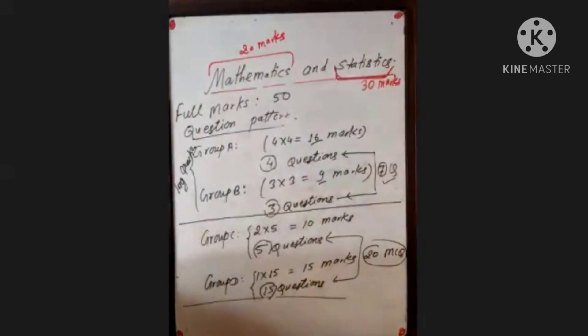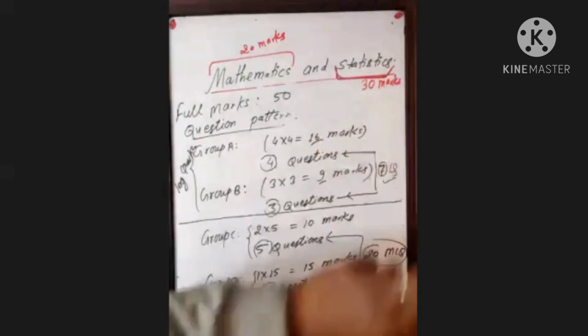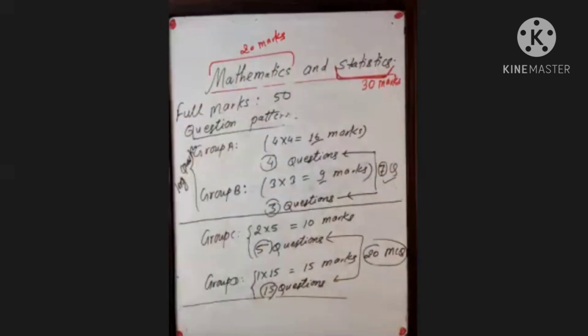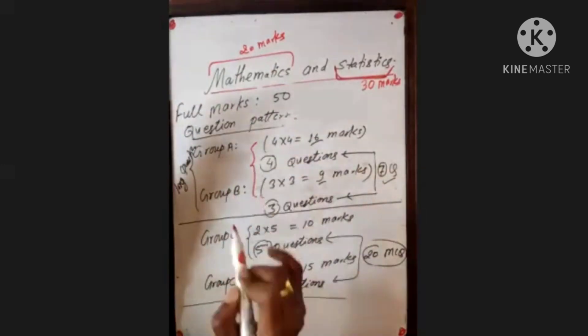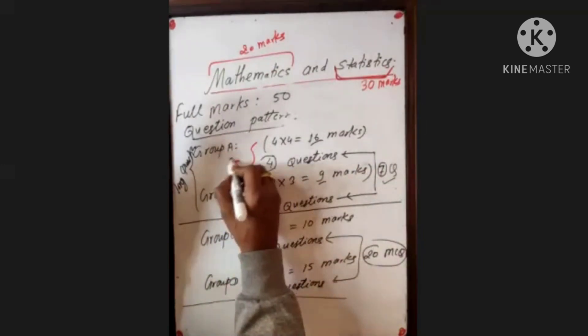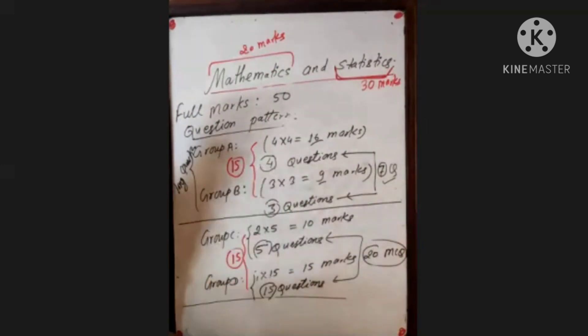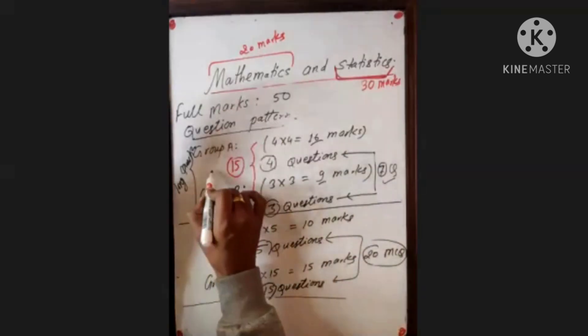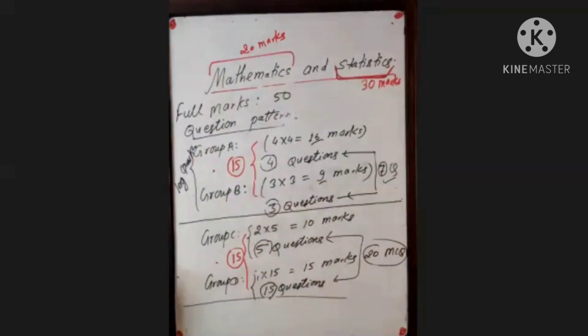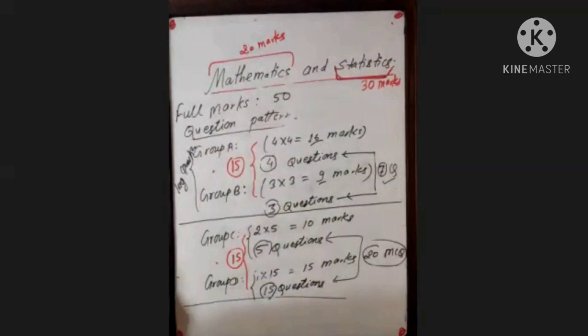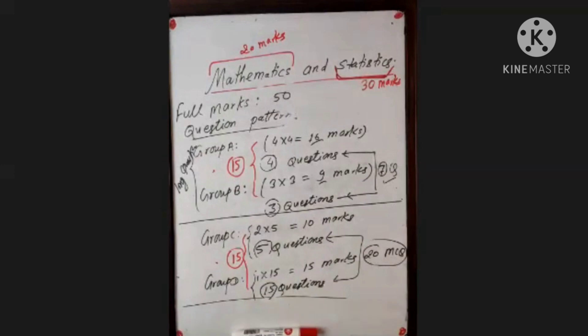In statistics, the statistics level is 30 marks every year, every session. The mathematics part is 20 marks for a total of 50 marks. In the 30 marks for basic statistics, there are 25 marks for long questions and 15 marks for multiple choice questions. In mathematics, it is 10 marks for each group, approximately 15 marks total.